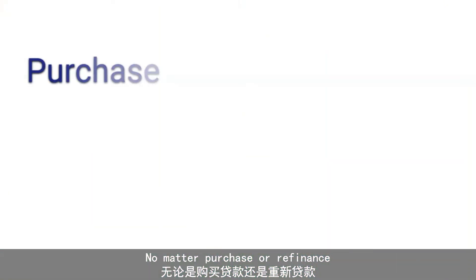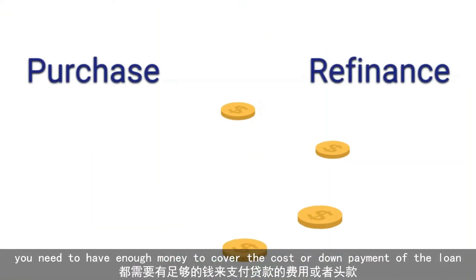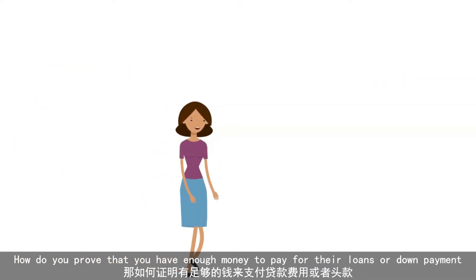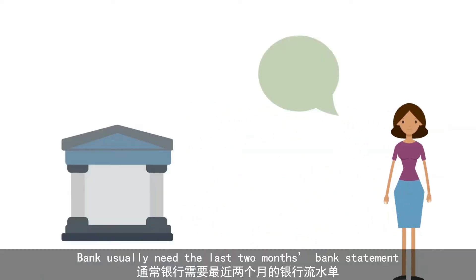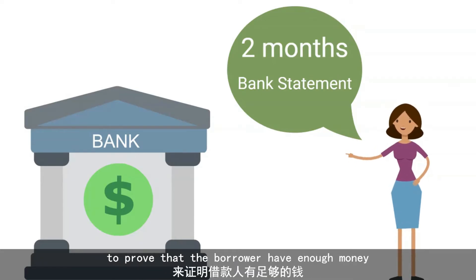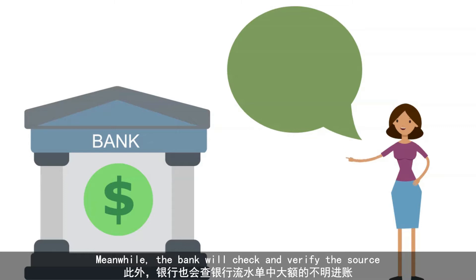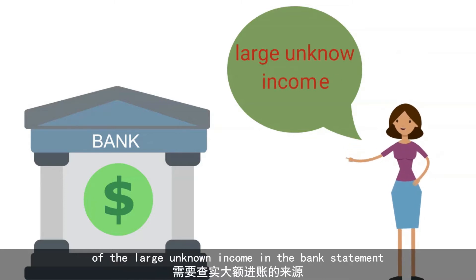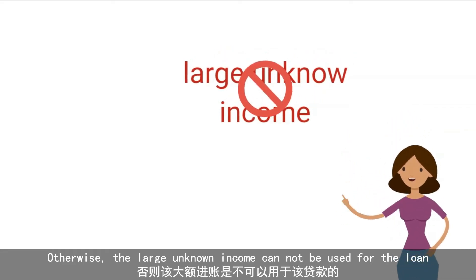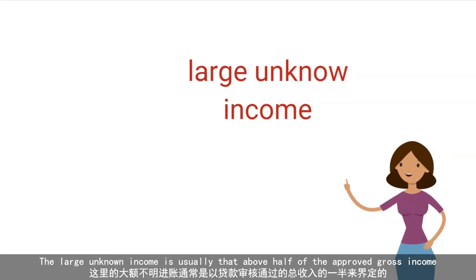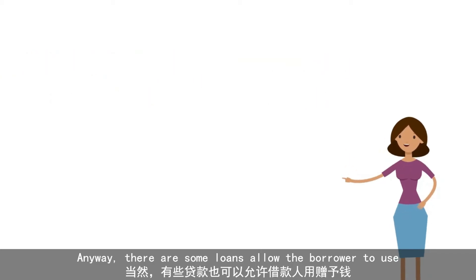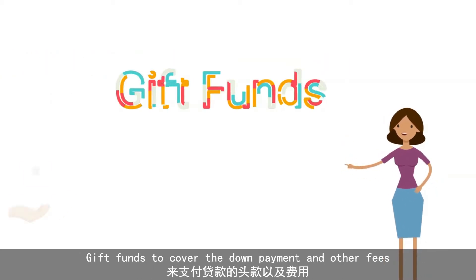No matter purchase or refinance, you need to have enough money to cover the cost or down payment of the loan. Banks usually need the last 2 months of bank statements to prove the borrowers have enough money. The bank will also check and verify the source of any large deposited income in the bank statement; otherwise, the large unverified income cannot be used for the loan. The threshold is usually above half of the approved gross income. Some loans also allow borrowers to use gift funds to cover the down payment and other fees.